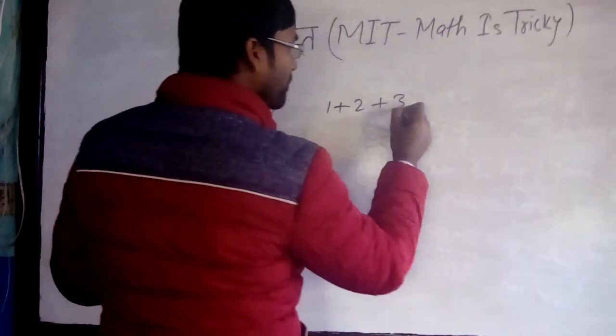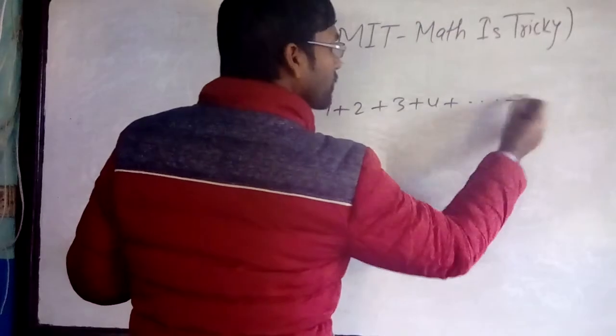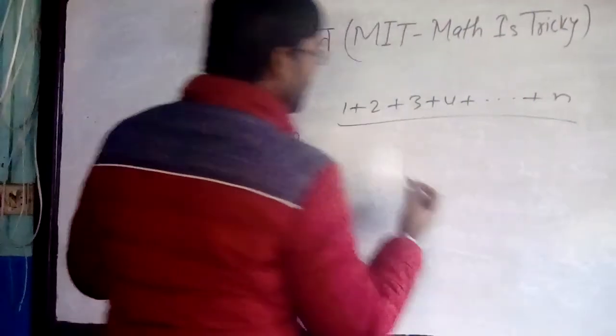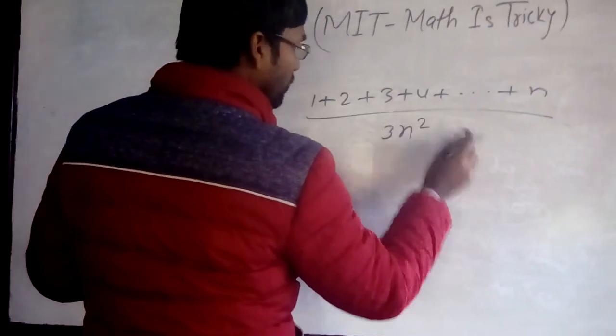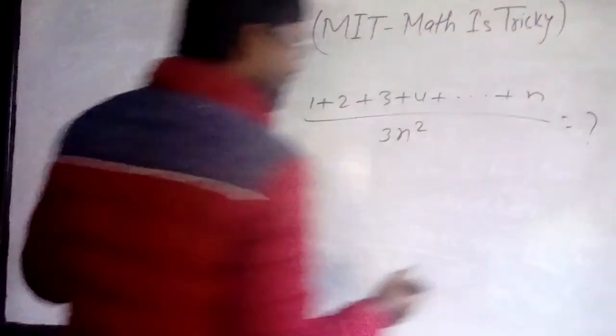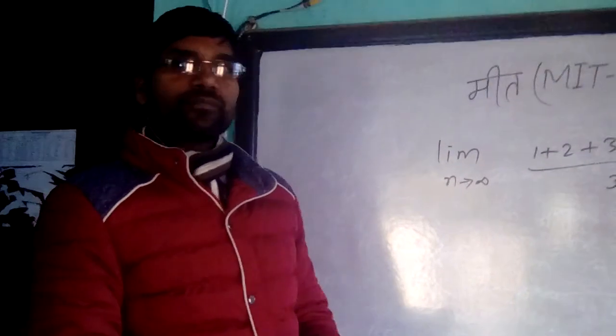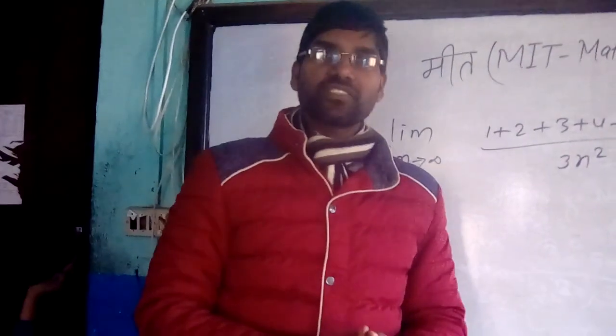n tends to infinity: (1 + 2 + 3 + 4 + ... + n)/(3n²). Please try by yourself and write down its answer. Till then, bye bye, take care. Thank you so much, God bless.